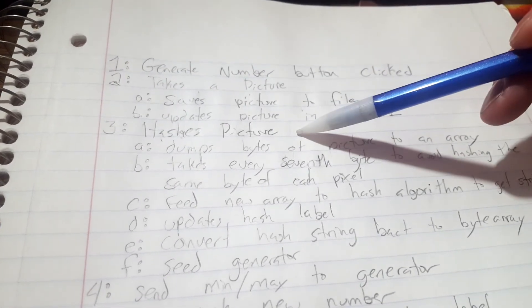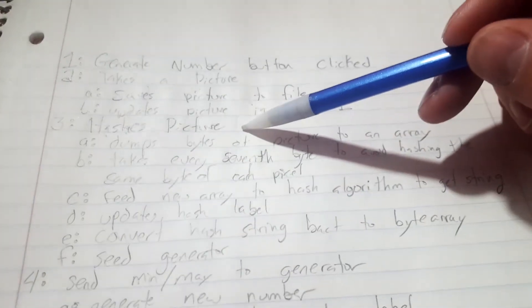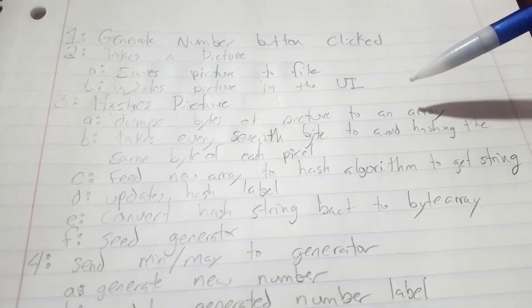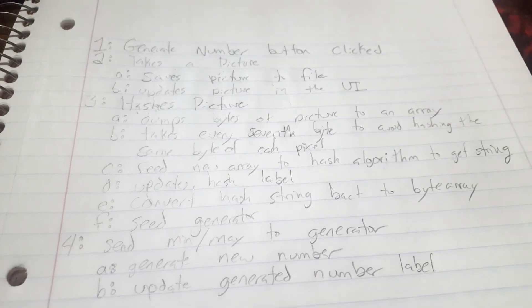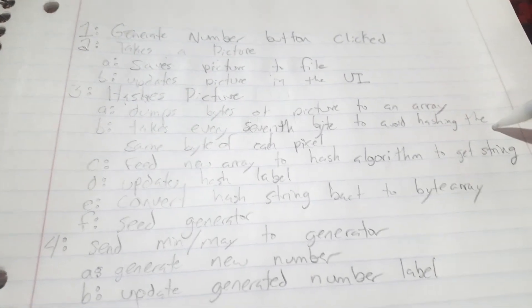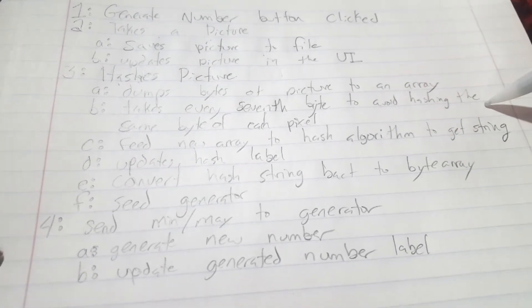Then it goes to hash the picture, and then this is where it loads up the picture. It dumps the bytes of the pictures to an array. Then it takes every 7th byte to avoid hashing the same byte of each pixel.